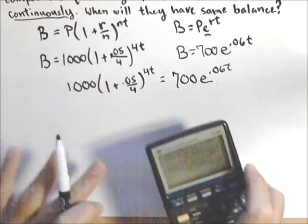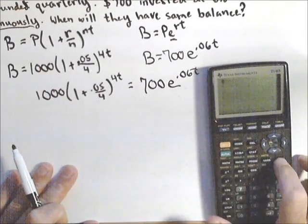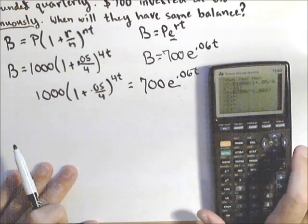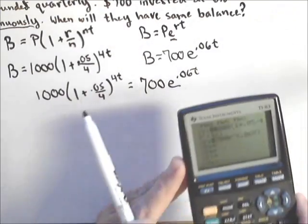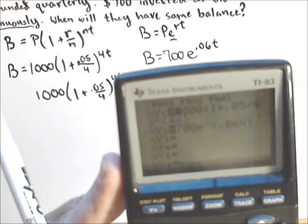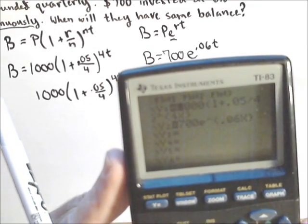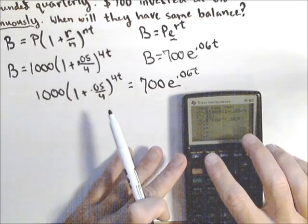So I'm going to bring up my graphing calculator here. If you look in my Y equals menu, what I've done is entered each equation. Let me bring that up so you can see how I've entered them. So I've got each equation in there, and what I'm going to need to do is graph them.